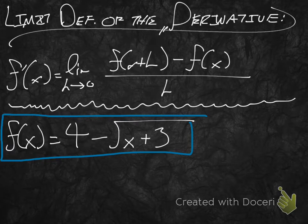The limit definition tells us to take the limit as h approaches 0 of: everywhere we see an x, put x plus h, and everywhere we see an x, rewrite the initial equation — all over h. Maybe it would be better if I actually made that look like an h.